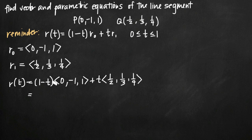Now we just need to simplify this. Simplifying is as easy as distributing (1-t) across each of our vector components 0, -1, and 1, and then distributing this t across our vector components 1/2, 1/3, and 1/4.